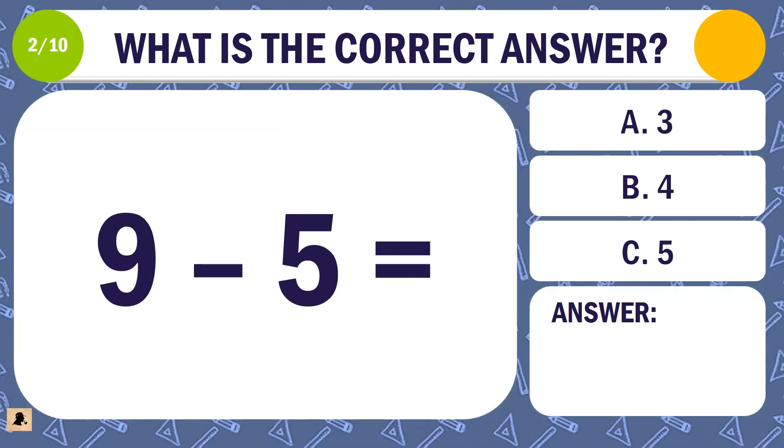Question 2. What is the correct answer for 9 minus 5? A. 3. B. 4. Or C. 5.